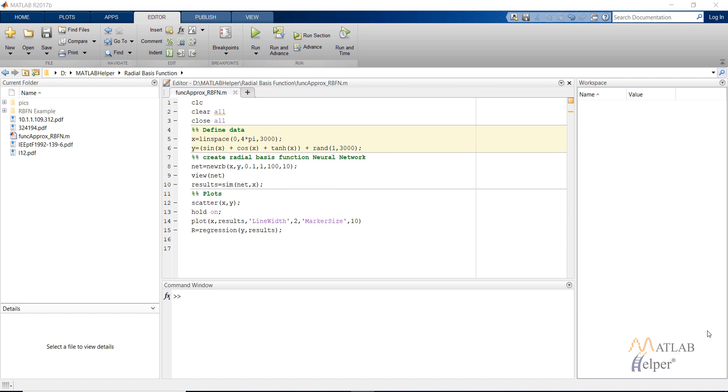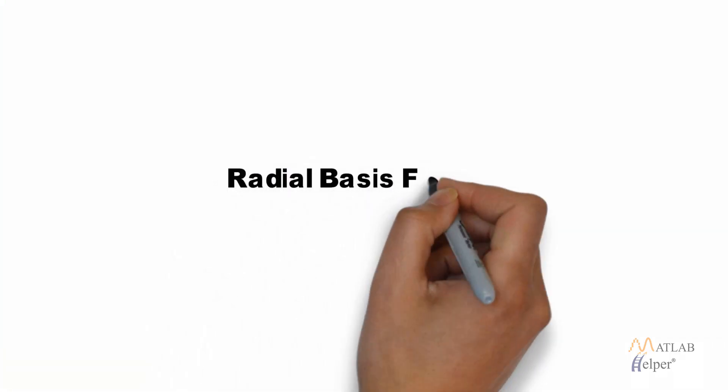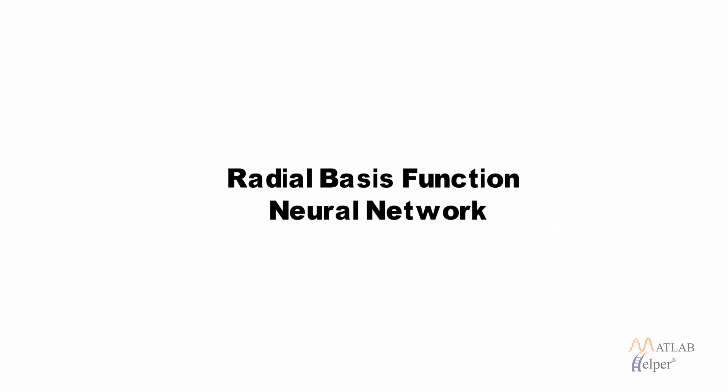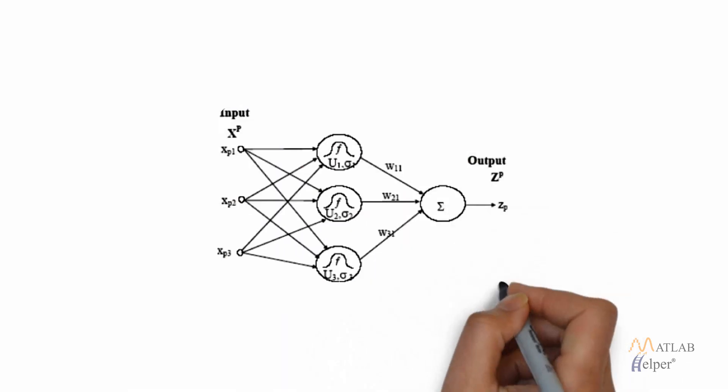The RBF network is a three-layer feed forward neural network. It consists of the first layer as the hidden layer and the second layer as the output layer. The hidden layer performs a nonlinear transform of the input and the output layer is a linear combiner mapping the non-linearity into a new space.